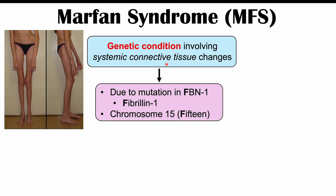Marfan syndrome is caused by a mutation in the FBN1 gene, and this gene encodes for a protein known as fibrillin 1. This particular gene, FBN1, is located on chromosome 15. A way to remember this is by the letter F: FBN1, fibrillin, and chromosome 15.